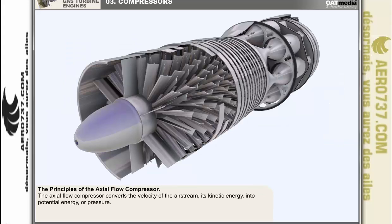We'll now examine the principles of the axial flow compressor, which are basically the same as those of the centrifugal flow compressor. The axial flow compressor converts the velocity of the airstream — its kinetic energy — into potential energy or pressure. The means which it uses to achieve this conversion are, however, different to those used in the centrifugal compressor.